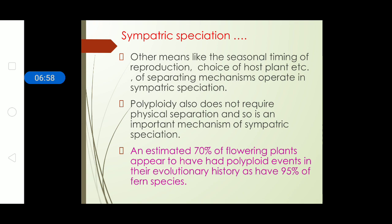Sympatric speciation also depends on seasonal timing of reproduction or choice of host plant. An estimated 70 percent of flowering plants appear to have polyploid events in their evolutionary history, and 95 percent of fern species. This is why, in spite of being in the same geographical location or habitat, they are not able to reproduce or form the same species, but mature differently to give rise to a new species.